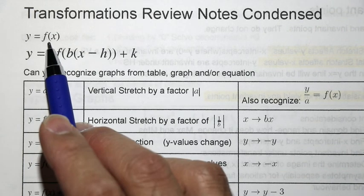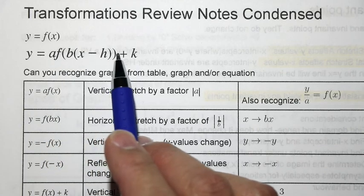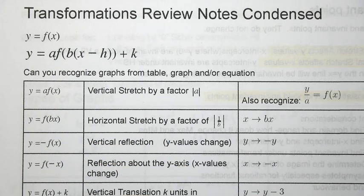Let's talk about transformations for five minutes. If you have this function f of x, and this is the series of transformations, you can see a, b, h, and k are parameters that you can use for transformations, and we'll go through each one of them.